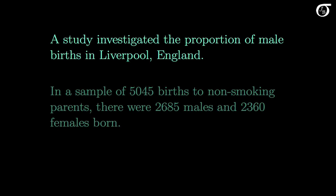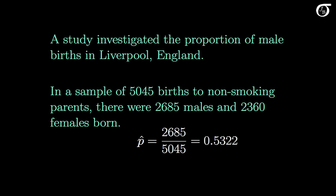Here's the example we'll look at. A study investigated the proportion of male births in Liverpool, England, and a possible association between smoking and the proportion of male births. In this video we are going to look at the proportion of male births to non-smoking parents. In a sample of 5,045 births to non-smoking parents, there were 2,685 males and 2,360 females born. The sample proportion of male births, P hat, is equal to 2685 over 5045, which to 4 decimal places is equal to 0.5322.